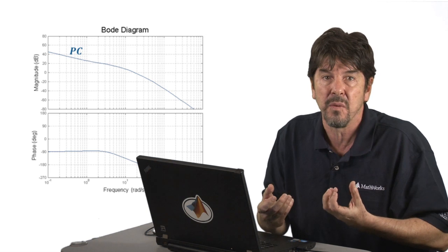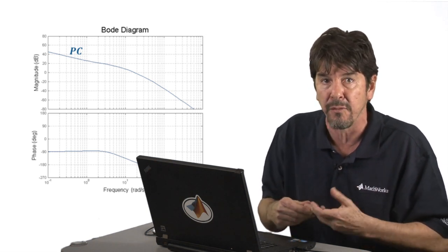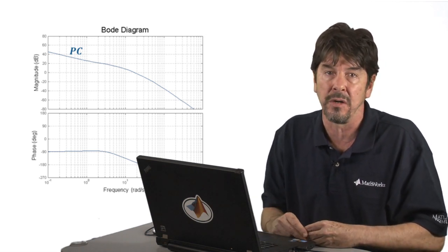So now we might ask, what kind of shape should we give to our open-loop transfer function in order for it to make the closed-loop system have the frequency characteristics we are looking for?